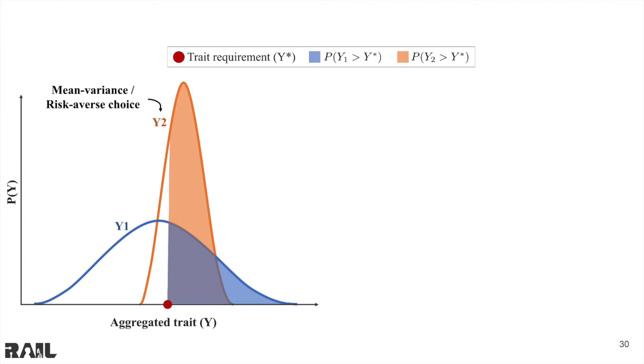Let's look at a one-dimensional toy example with two separate allocation possibilities. Shown here are the resultant trait distributions from an allocation Y1 and Y2. Y1 in blue has a larger variance and a lower mean, and Y2 has a smaller variance and a higher mean.